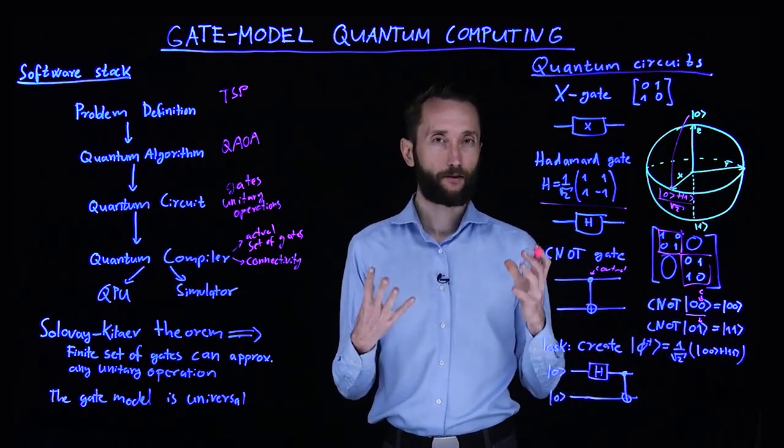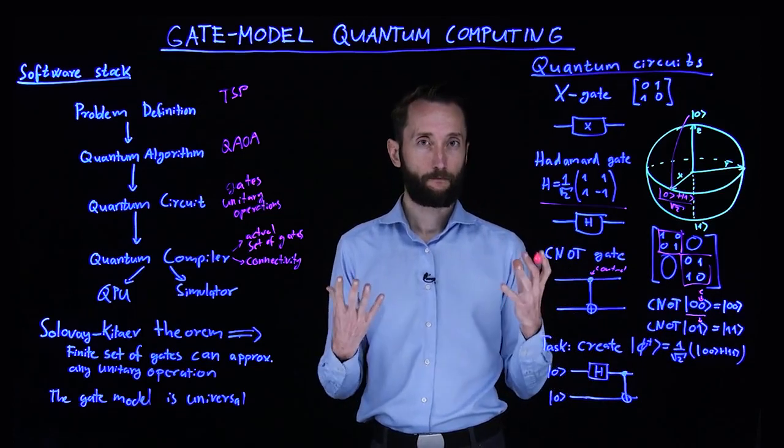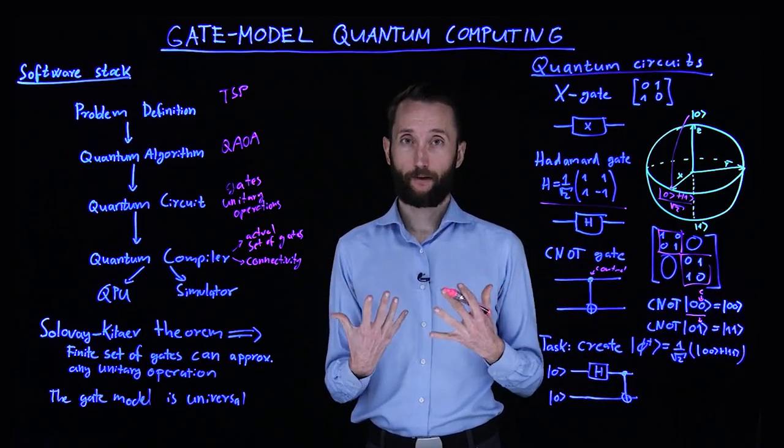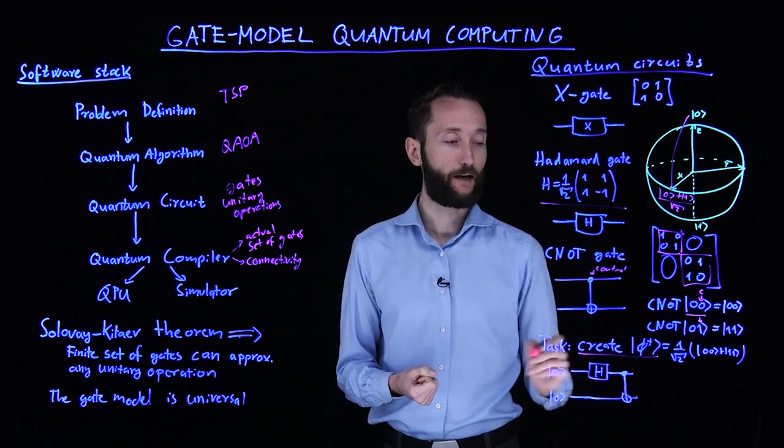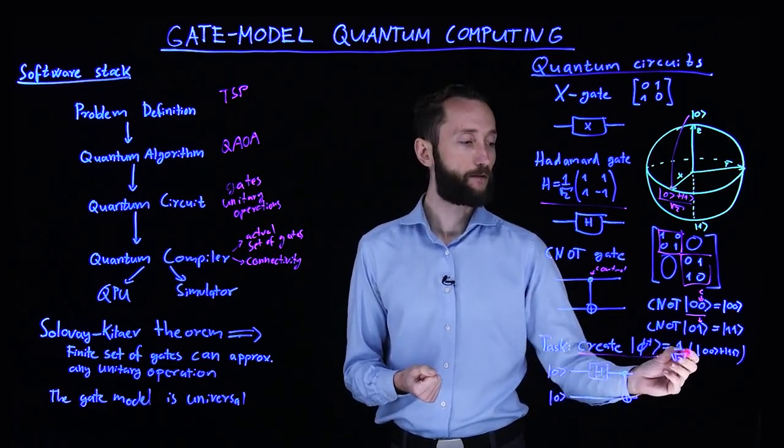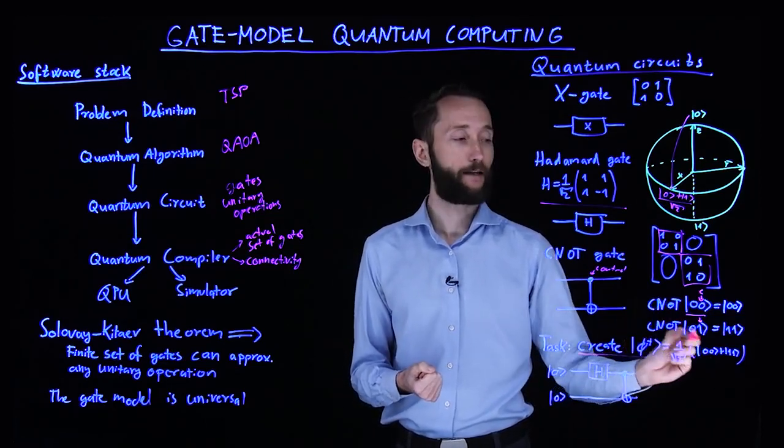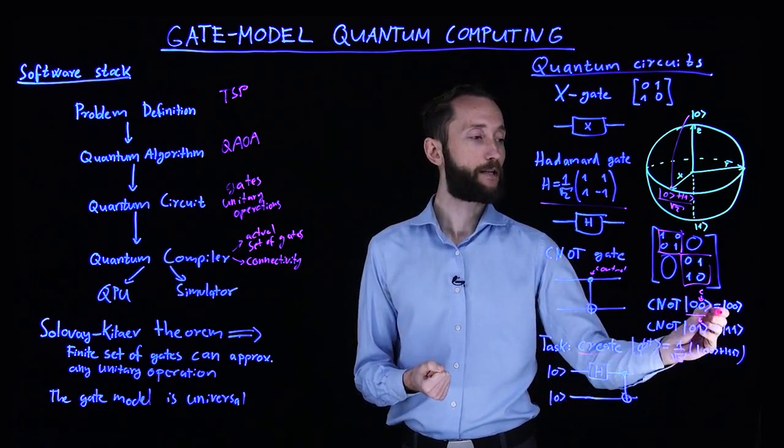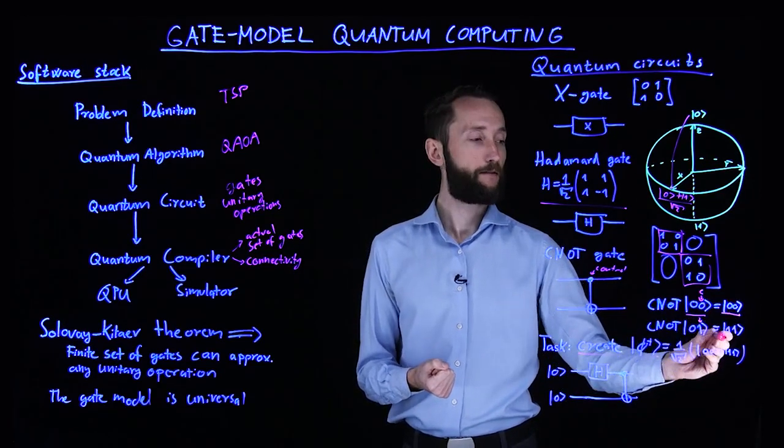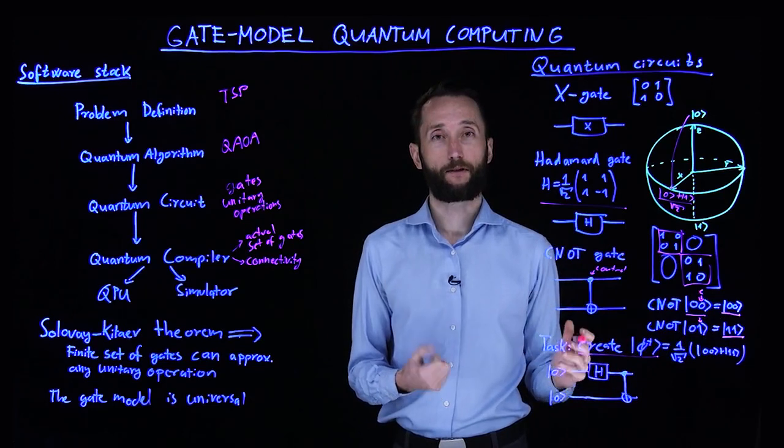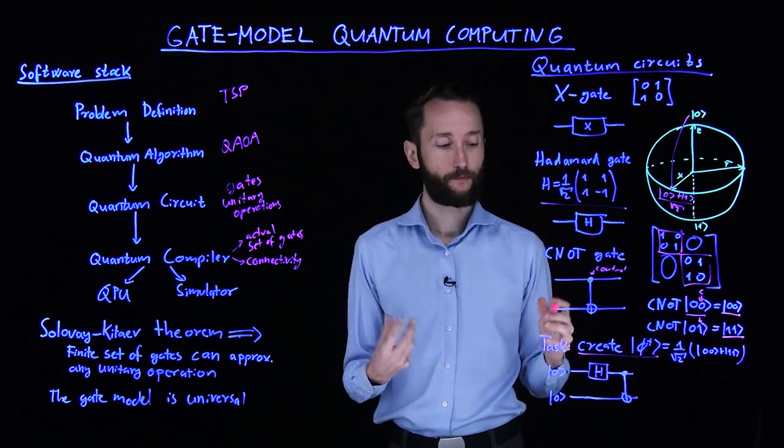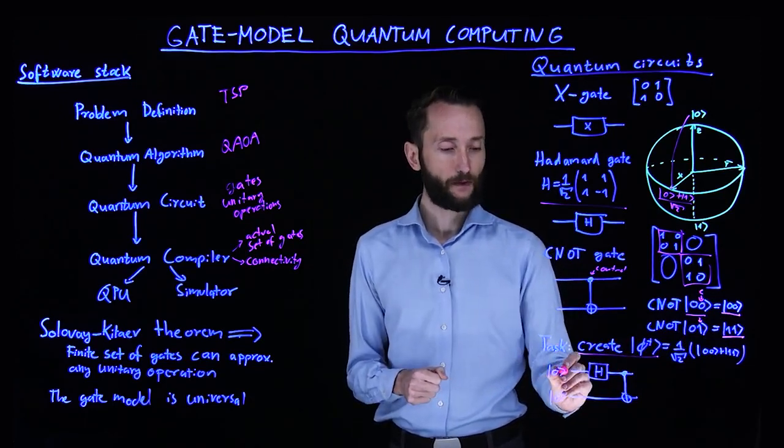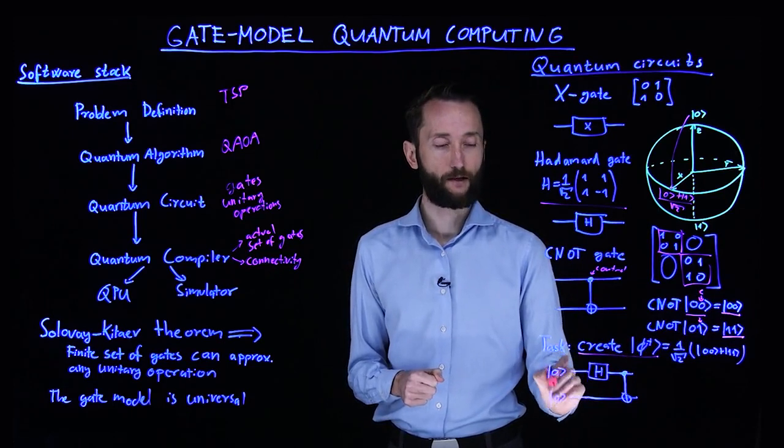So now we can start thinking about preparing our first quantum algorithm, which would be the creation of the phi plus state, which is the equal superposition of the zero, zero ket and the one, one ket. So we see that we can easily create this. We can easily create this, but we want to create them at the same time. So what we do is we initialize two qubits in zero, zero.